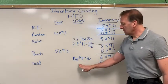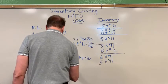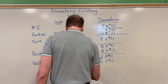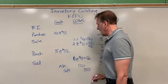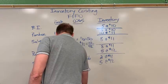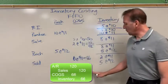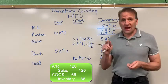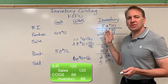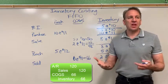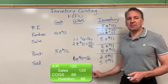Let's look at the journal entry for selling those six. Accounts receivable — six times $20 is $120 — so debit accounts receivable, credit sales revenue $120. Then debit cost of goods sold, credit inventory for $66. I want to point out that this spreadsheet is dealing with purchases, cost of goods sold, and inventory. We're not calculating the sales directly, but we know the sales amount. This spreadsheet is dealing with the second half of the journal entry.